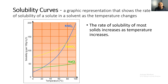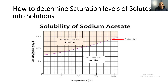How do you determine saturation levels of solutes in solutions? Here is the solubility of sodium acetate shown by this line. When you plot a point — say at 75 degrees Celsius with 150 grams — if your point is above the line, the solution is supersaturated.